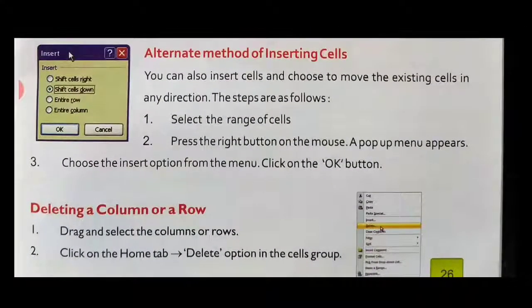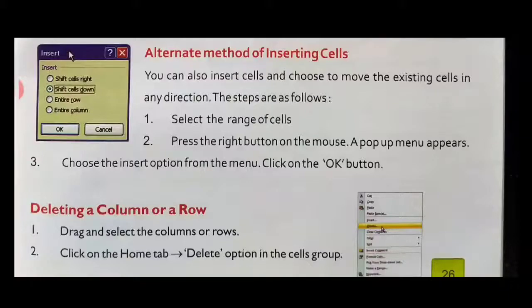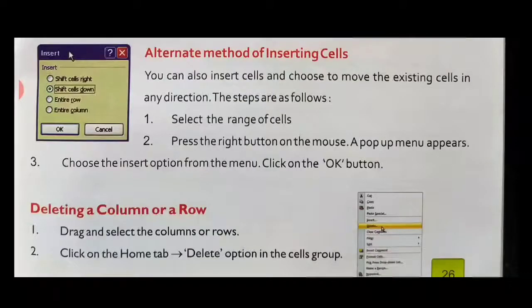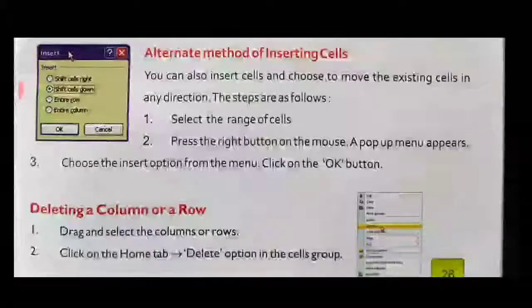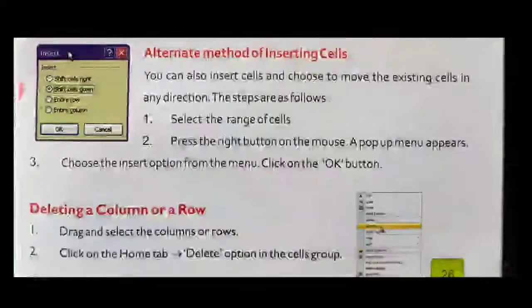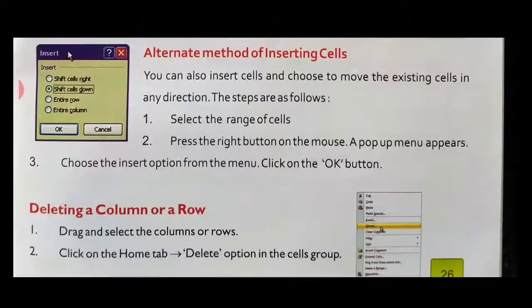Next is the alternate method of inserting cells. You can also insert a cell and choose to move existing cells in any direction. First, select the range of cells. Second, press the right mouse button — a pop-up menu will appear. Third, choose the Insert option and click OK. A dialog box appears showing options: Shift Cells Right, Shift Cells Down, Entire Row, or Entire Column. Choose the option you need — for example, to add a cell below, click Shift Cells Down.